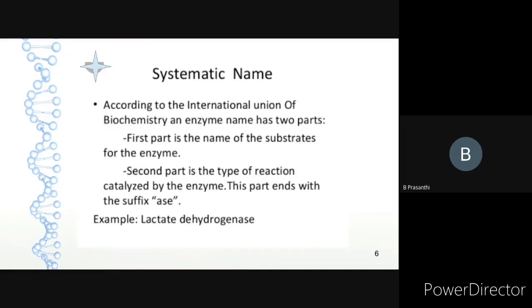Regarding systematic names, according to the International Union of Biochemistry, enzyme systematic classification is divided into two parts. The first part is the naming of the substrates for the enzyme, and the second part is the type of reaction. These parts end with the suffix '-ase'. For example, lactate dehydrogenase.